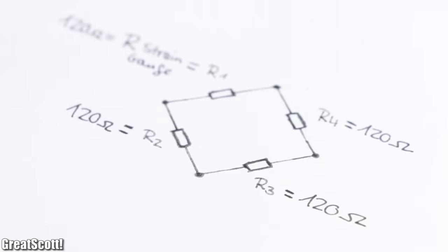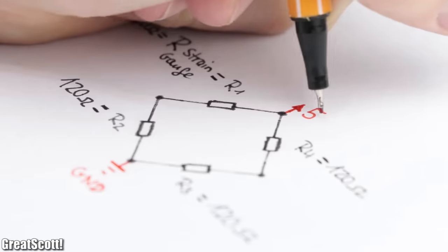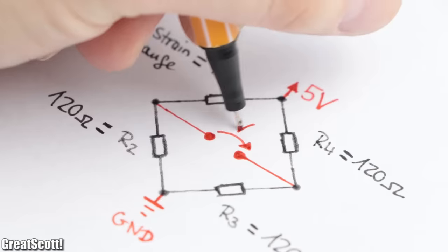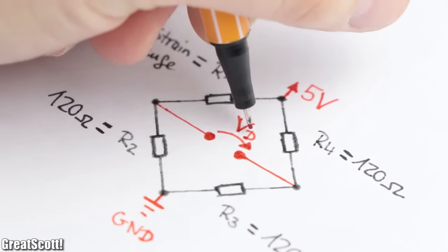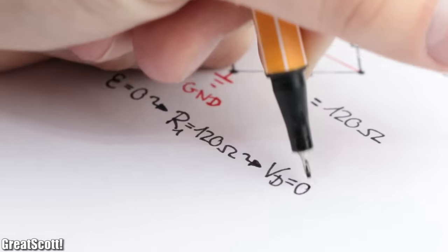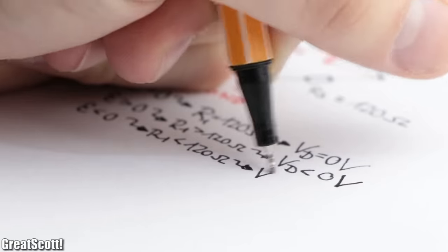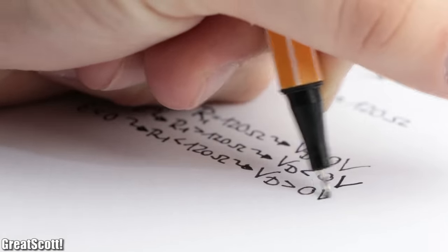120 Ohm resistors and applying a 5 volt supply voltage to the circuit, we would get a voltage difference of 0 volts between the resistors if no force is applied, and a voltage proportional to the strain if a force is applied.